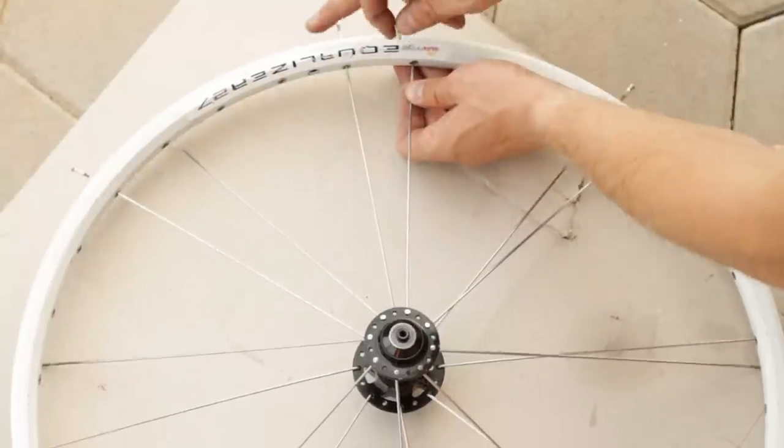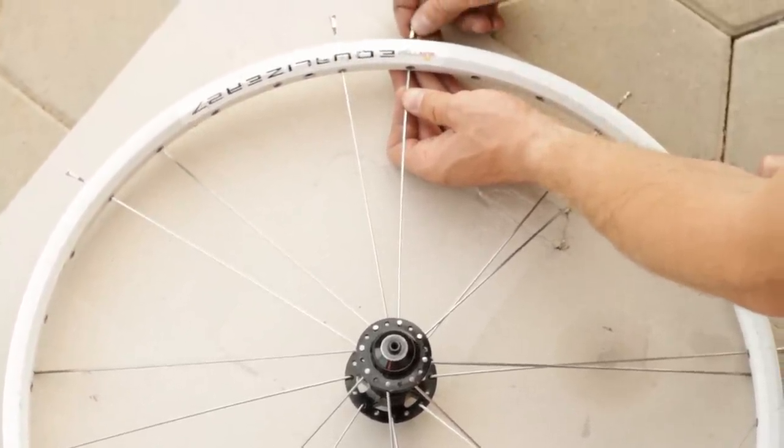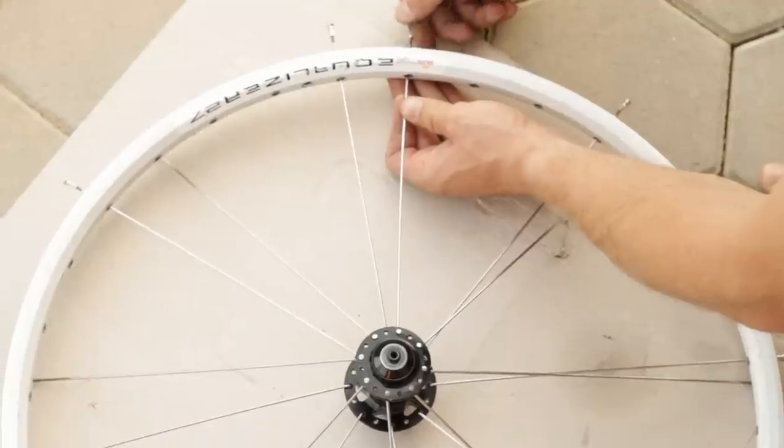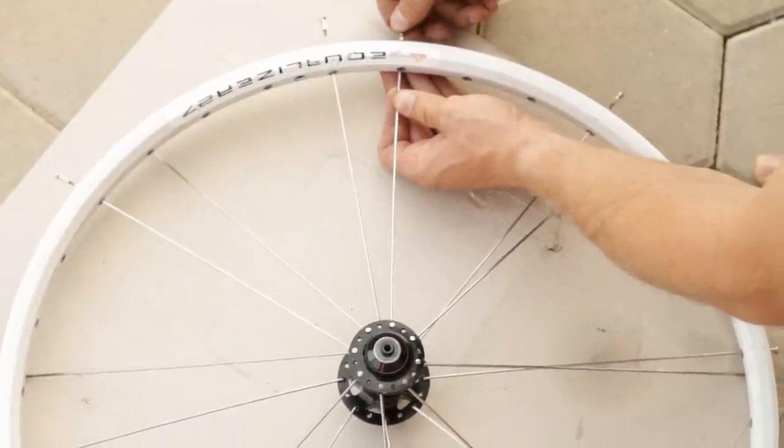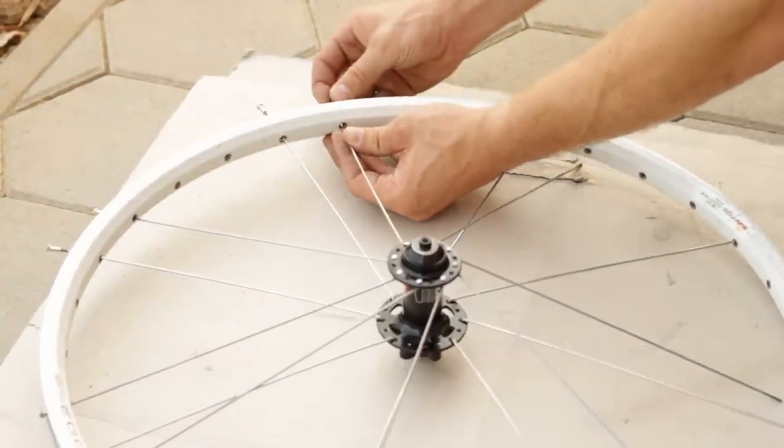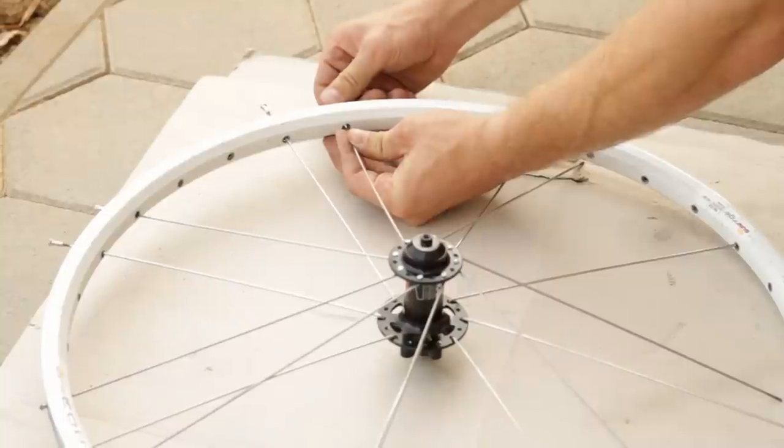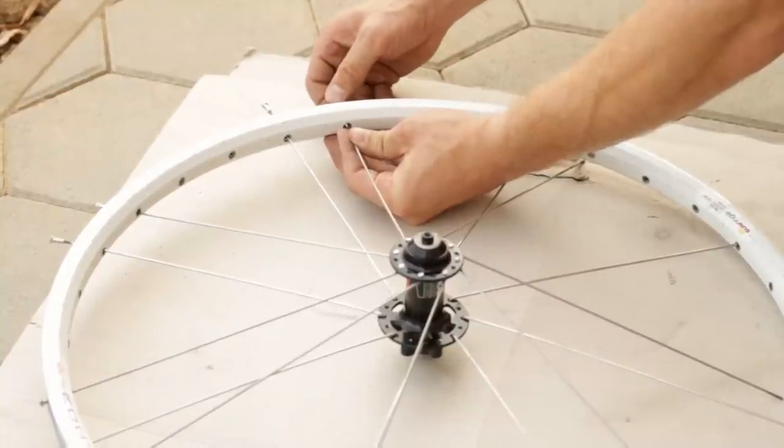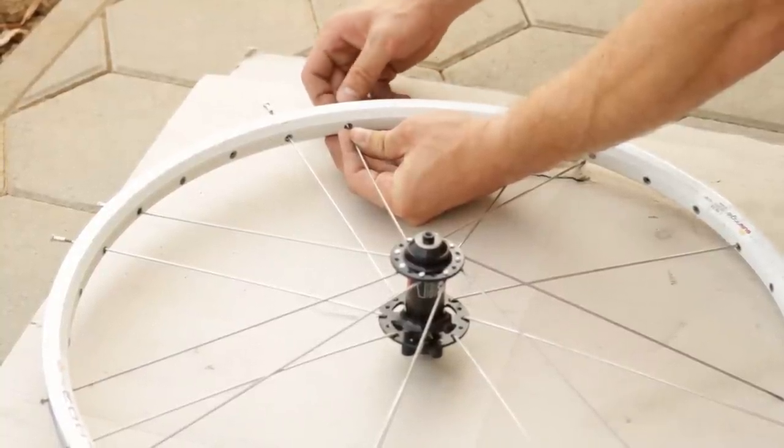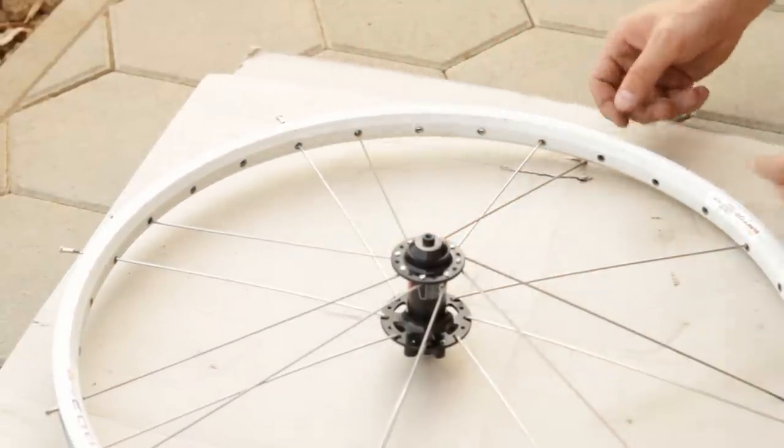Put this new spoke into the second hole clockwise from the valve hole next to the first spoke you installed. Double check to make sure that the spoke you just installed starts at a hole in the hub flange, which is one half a hole space clockwise from the hole in the lower flange where the first spoke you installed started. These two spokes should be diverging but still nearly parallel.